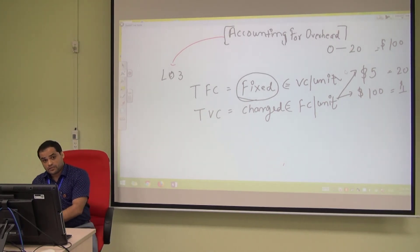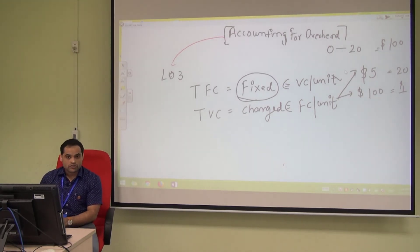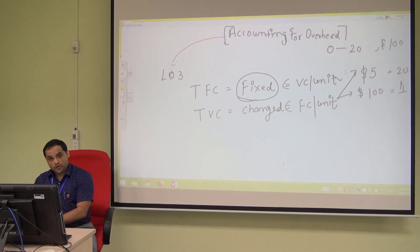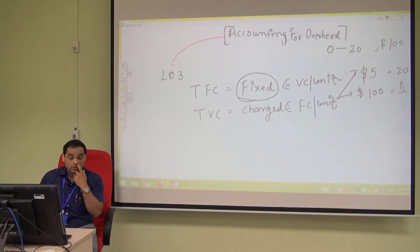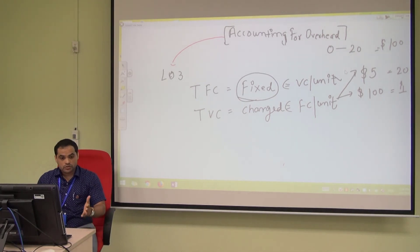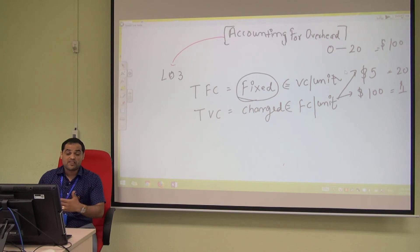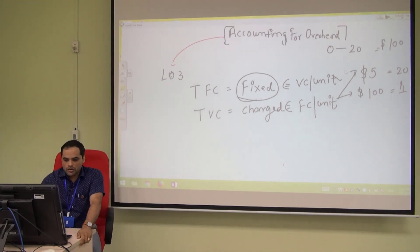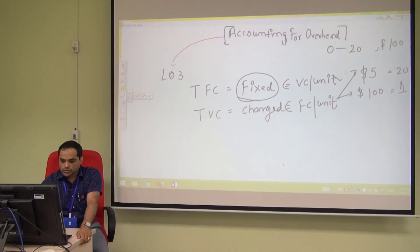To summarize: total fixed cost remains the same regardless of whether production increases or decreases. Fixed cost per unit changes with the level of production. Total variable cost changes with the level of production. Variable cost per unit remains the same no matter how much you produce or how many hours workers work — companies pay a fixed rate per hour or per product.